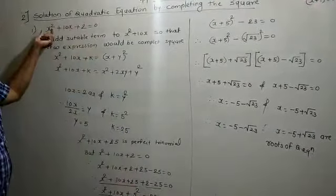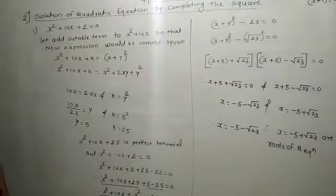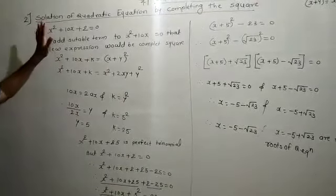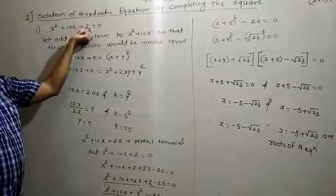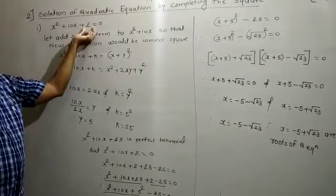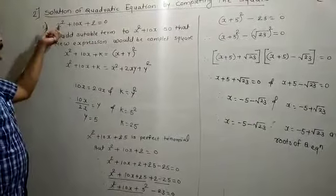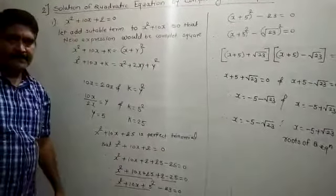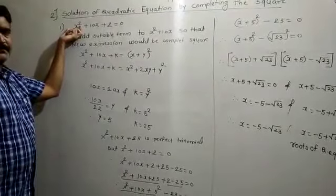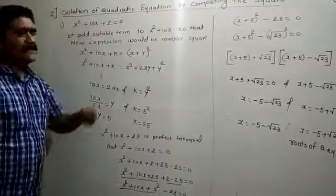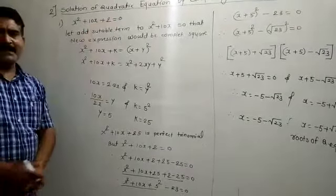The example is: x squared plus 10x plus 2 is equal to 0. First, confirm this is a quadratic equation — the highest index of the variable is 2, so yes, it is a quadratic equation. However, the last term is not a perfect square term.